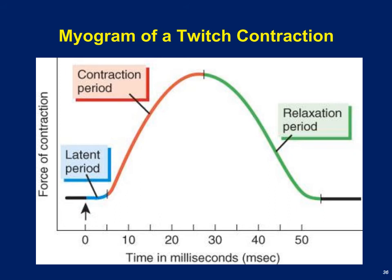A muscle twitch lasts only 45 milliseconds, which is a very short period of time — we can't do much useful work in that span. The refractory period is the period after the initial contraction of a muscle fiber when that muscle will not or is unlikely to contract again. It's usually very short, but if we stimulate it again immediately after contraction, it may not contract for a few more milliseconds. This is because we have to restock all the calcium back into the sarcoplasmic reticulum and refresh our supply of ATP.